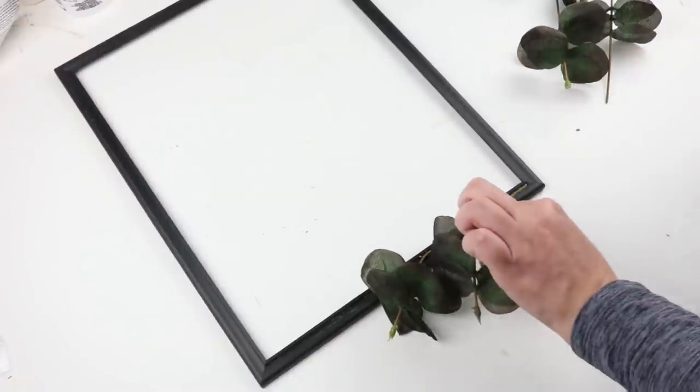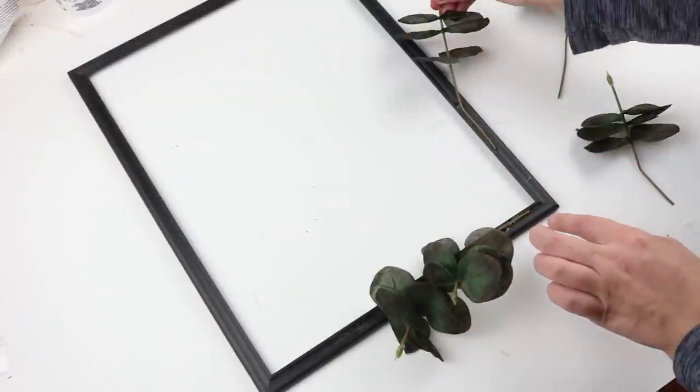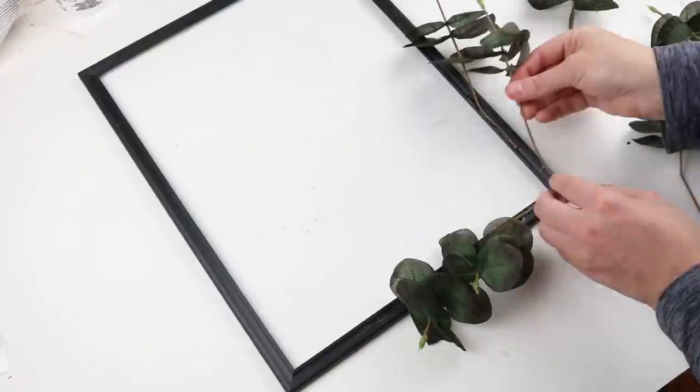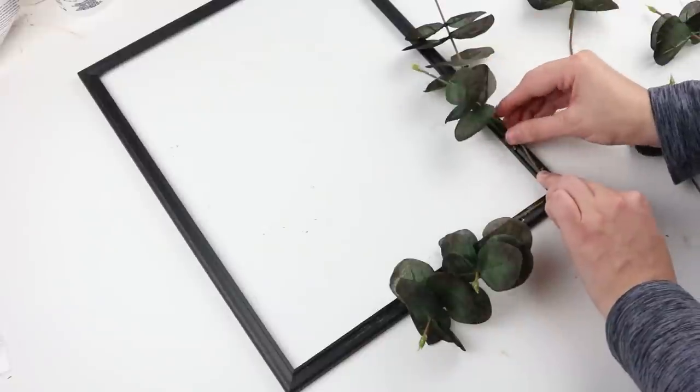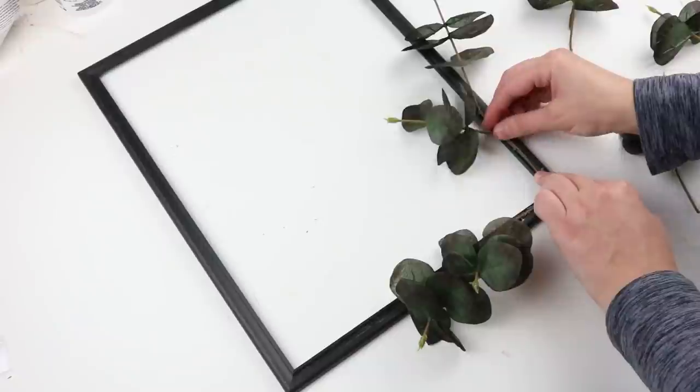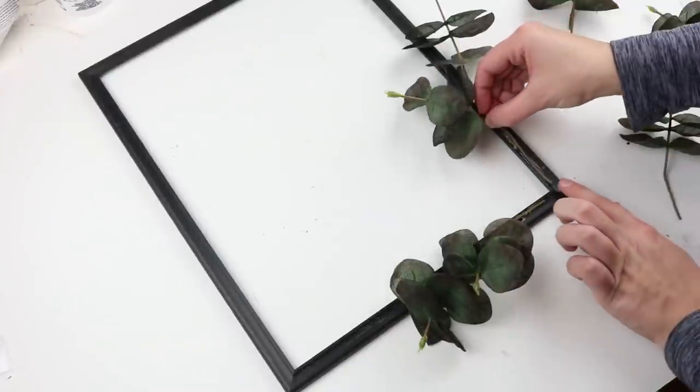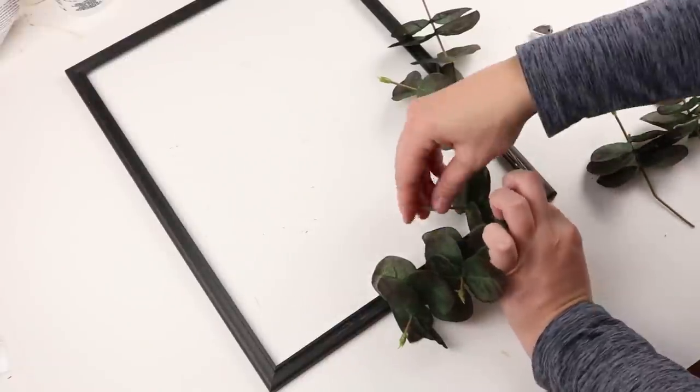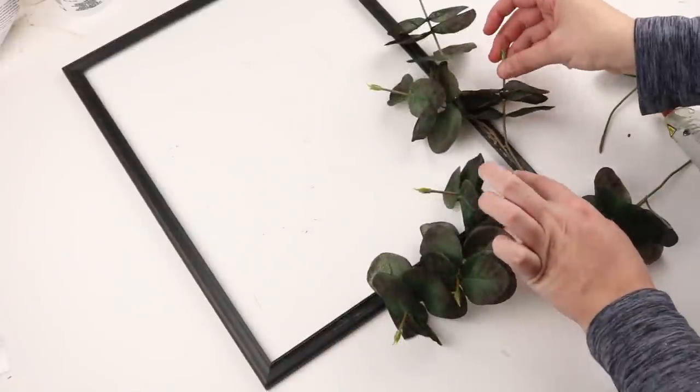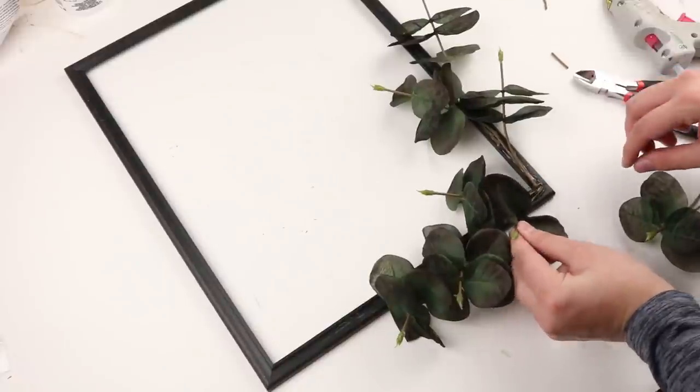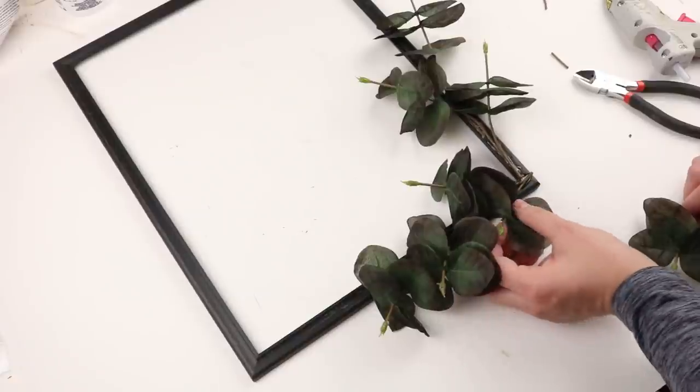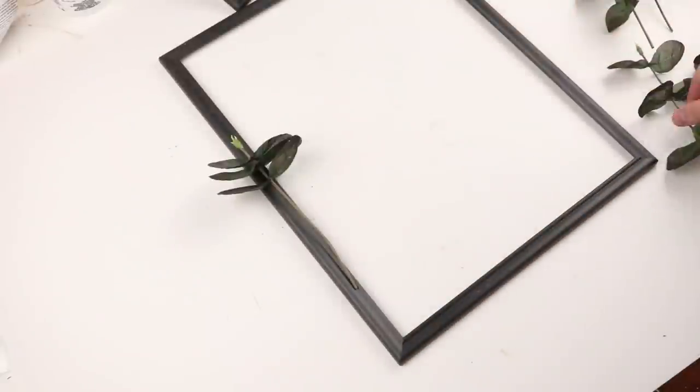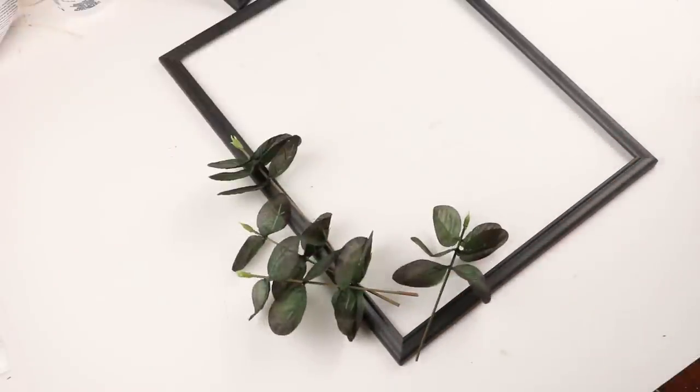Instead of just cutting to the end where all this is glued down, I'm going to show you exactly how I put this on. We've had comments of people saying they want this, so if you want to skip to where this is done, skip forward probably a couple minutes. When you're doing this, make sure to make it look organic like it's growing up the frame. Try to have some going towards the middle, towards the outside, and make sure it covers up where the other stems are and where you're hot gluing. For the other frame we're doing the same thing but for the bottom left corner.